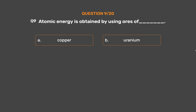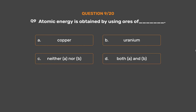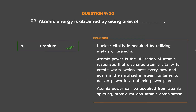Question number nine: atomic energy is obtained by using ores of underscore. Option A: copper. Option B: uranium. Option C: neither A nor B. Option D: both A and B. The correct answer is option B, uranium. Nuclear energy is acquired by utilizing metals of uranium. Atomic power is the utilization of nuclear reactions that release nuclear energy to create heat, which is then used in steam turbines to deliver electricity in a nuclear power plant. Atomic power can be obtained from nuclear fission, nuclear decay, and nuclear fusion.